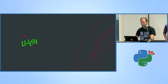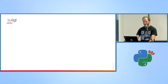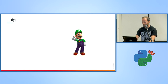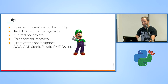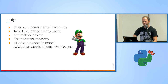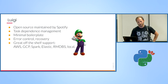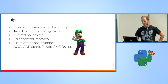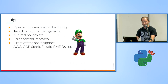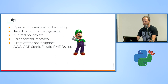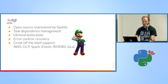Now let's talk a bit more about Luigi. Why Luigi? It's actually because it handles pipes. It was created by Spotify back in 2012, then open sourced by them and still being maintained by Spotify. It has really nice and minimal boilerplate, a nice error recovery mechanism, and it supports all the off-the-shelf products like AWS, GCP, Spark, etc.